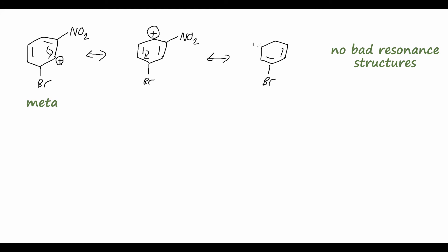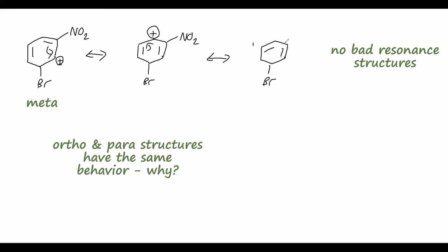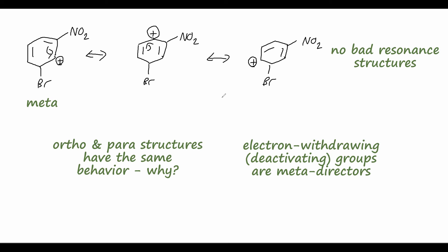The meta substitution is relatively stable. I'll leave it up to you to draw out the resonance structures for the para substituent — you can convince yourself it will have the same destabilizing behavior as the ortho, with adjacent positive charges. In general, electron-withdrawing or deactivating groups like the nitro group are labeled as meta-directing, so meta substitutions are more stable and ortho and para attack will be highly disfavored.